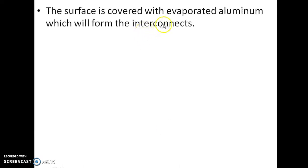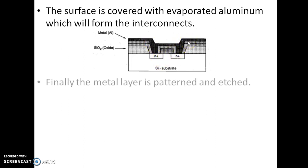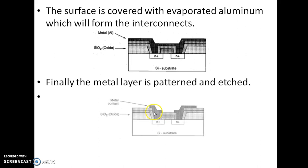The surface is then covered with evaporated aluminum which will form the interconnect. Finally, the metal layer is patterned and etched, forming contacts for either the drain or source. These are the steps in the NMOS transistor fabrication.